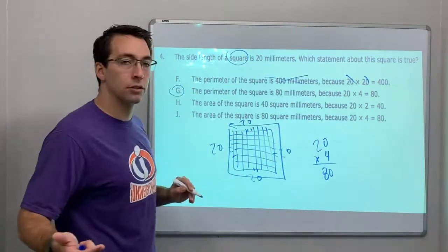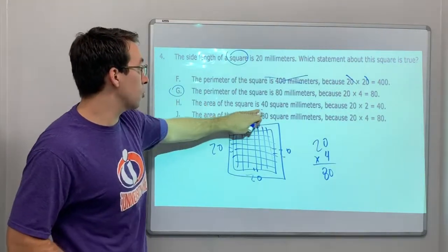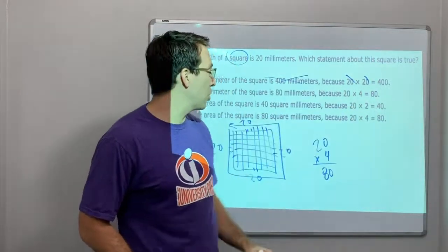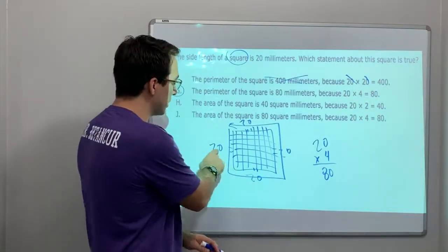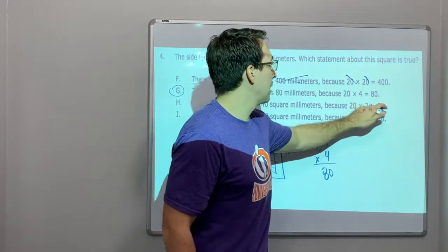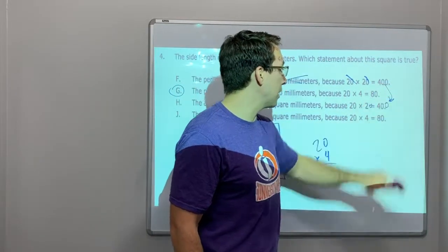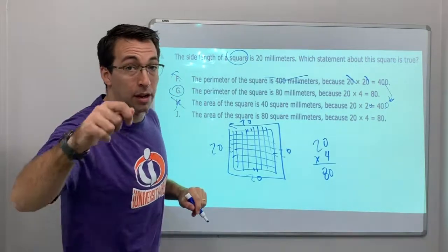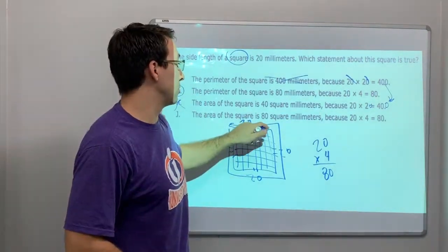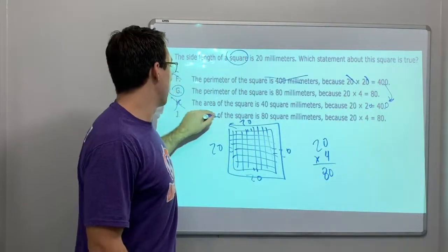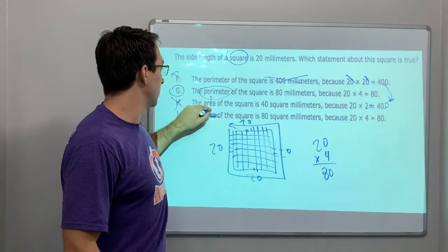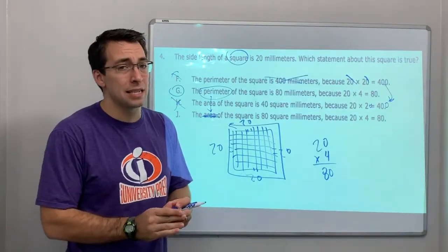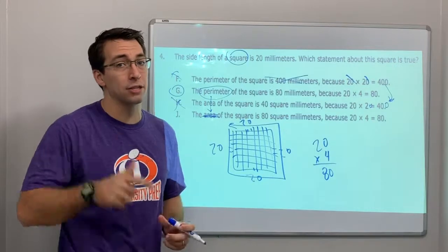Answer choice H says the area of a square is 40 square millimeters — no, that's 20 times 2, not 20 times 20. The area is 400. Answer choice J says the area is 80 millimeters because 20 times 4 — no, that's the perimeter. So this question tests multiplication, knowledge of square definitions, and geometry vocabulary.